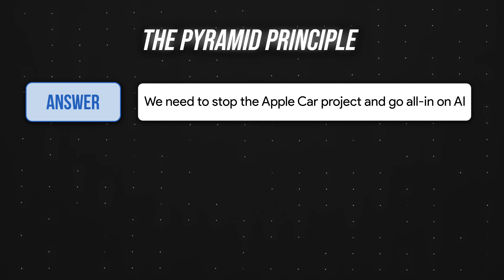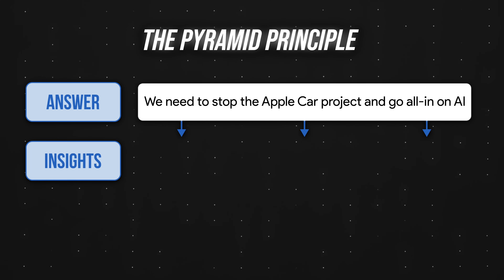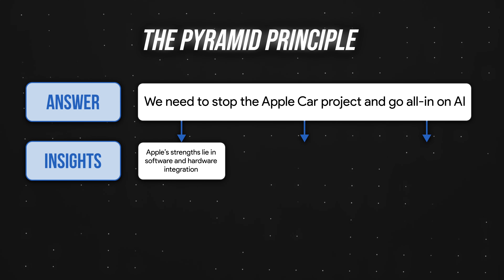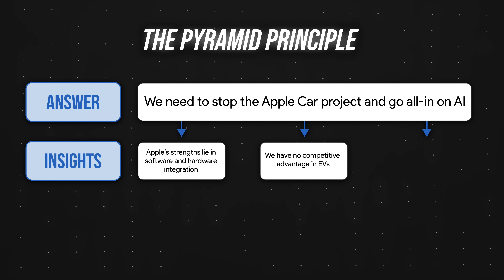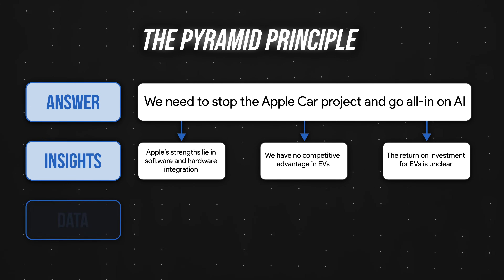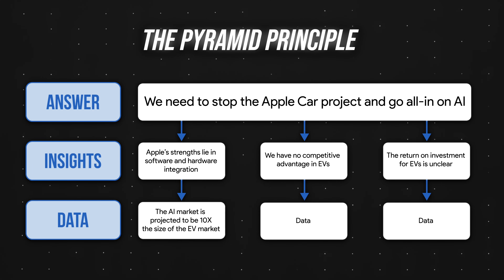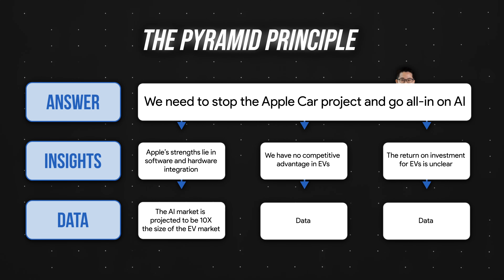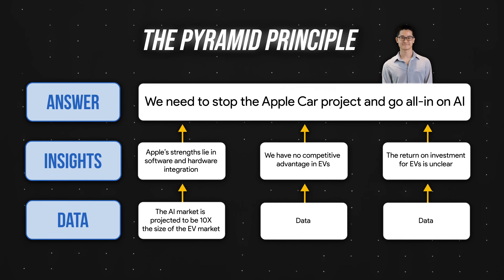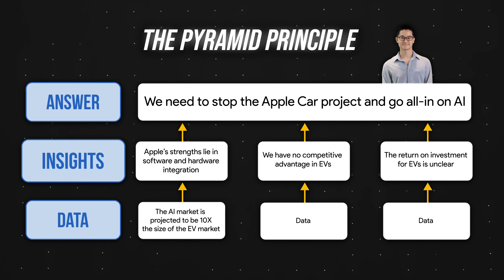The pyramid principle flips the order of these slides — we lead with the answer: 'We need to stop the Apple Car project and go all in on AI.' Then showcase the supporting arguments: Apple's strengths lie in software and hardware integration, we have no competitive advantage in EVs, and the return on investment for EVs is unclear. Finally, surface the data to back up these claims. According to Harn, it's fine to think from the bottom up, but if you want a clear and impactful presentation, you want to present from the top down.